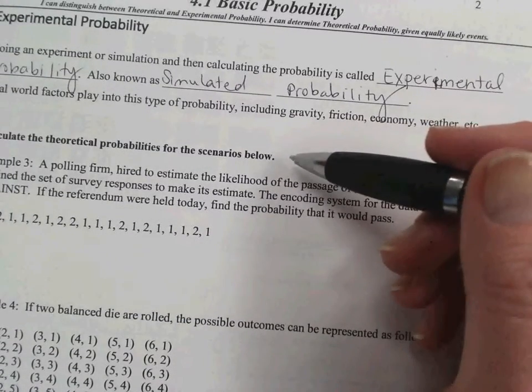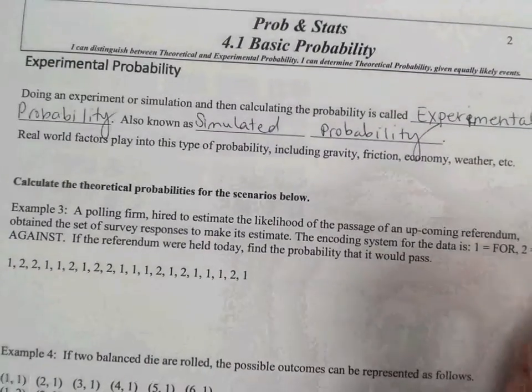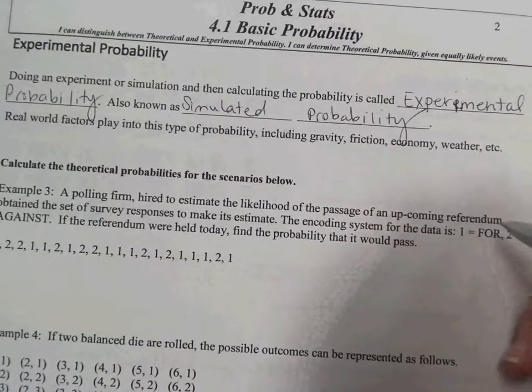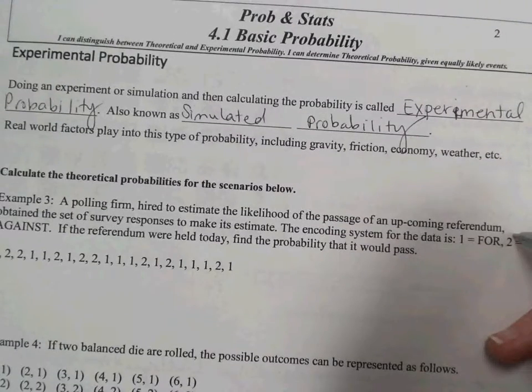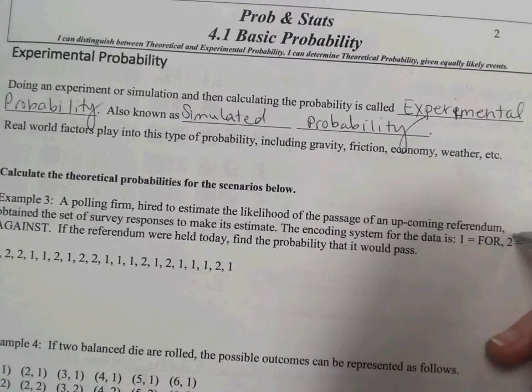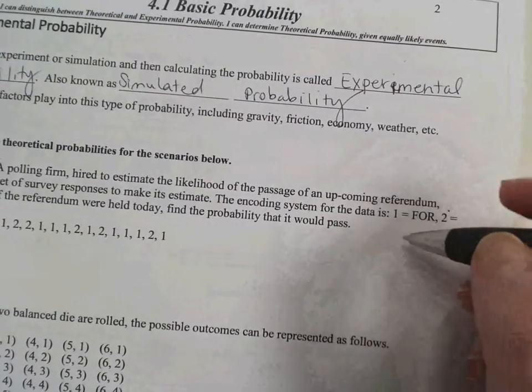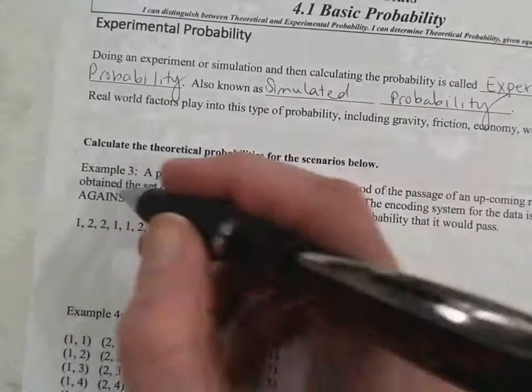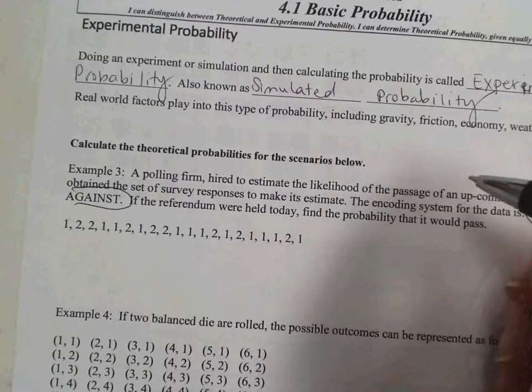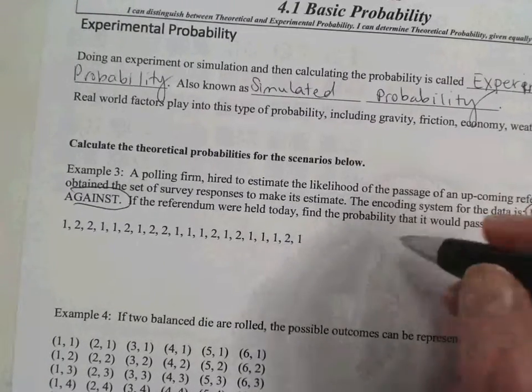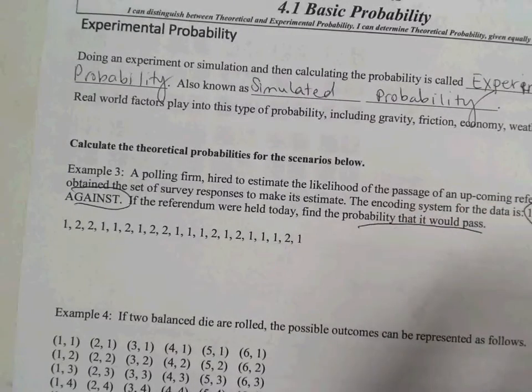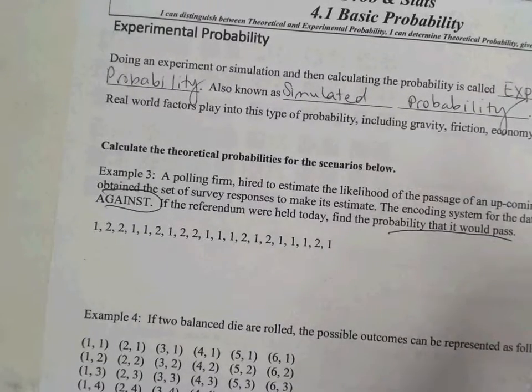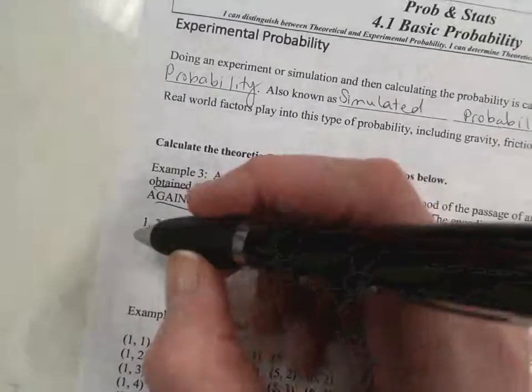Calculate theoretical probabilities for the scenarios below. A polling firm hired to estimate the likelihood of the passage of an upcoming referendum. Obtain the set of survey responses to make its estimate. The encoding system for the data: one means people are for the referendum and a two means that they are against the referendum. If the referendum were held today, find the probability that it would pass. So we want to look and see how many people were for the referendum.